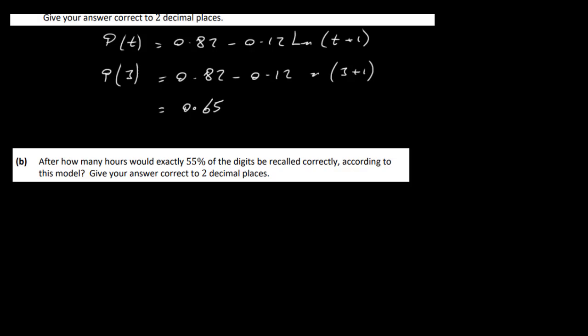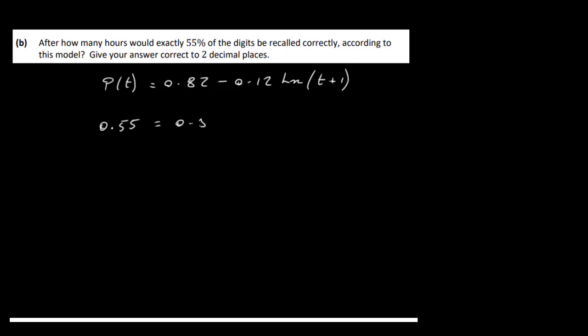Let's have a look at part b. After how many hours would exactly 55% of the digits be recalled correctly according to this model? Give your answer to two decimal places. This is working out t — working backwards. Write down the original formula: p(t) = 0.82 − 0.12 log(t + 1). We're told that 55% of the digits are recalled, so we convert that to a decimal: 0.55 = 0.82 − 0.12 log(t + 1).